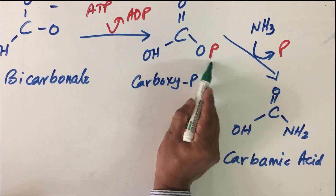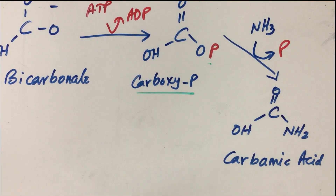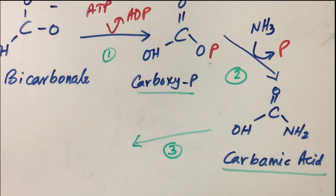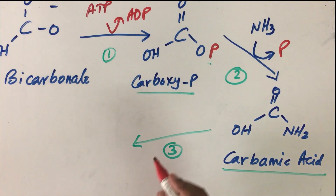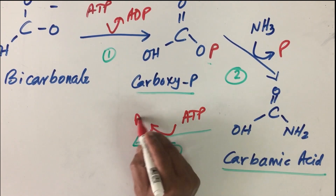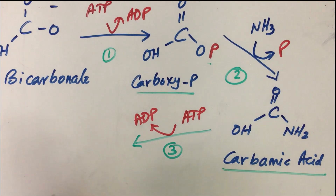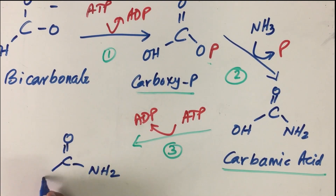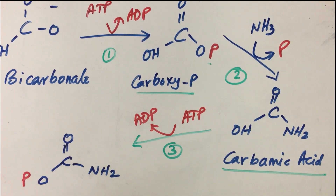In the first sub-reaction, bicarbonate ion combines with ATP to activate it — a phosphate group is added to form carboxy phosphate. In the second sub-reaction, an ammonium ion already present in the mitochondrial matrix displaces the inorganic phosphate to form carbamic acid. In the third sub-reaction, another ATP molecule is used; ADP and inorganic phosphate are released, and a phosphate group is added to carbamic acid, forming carbamoyl phosphate.